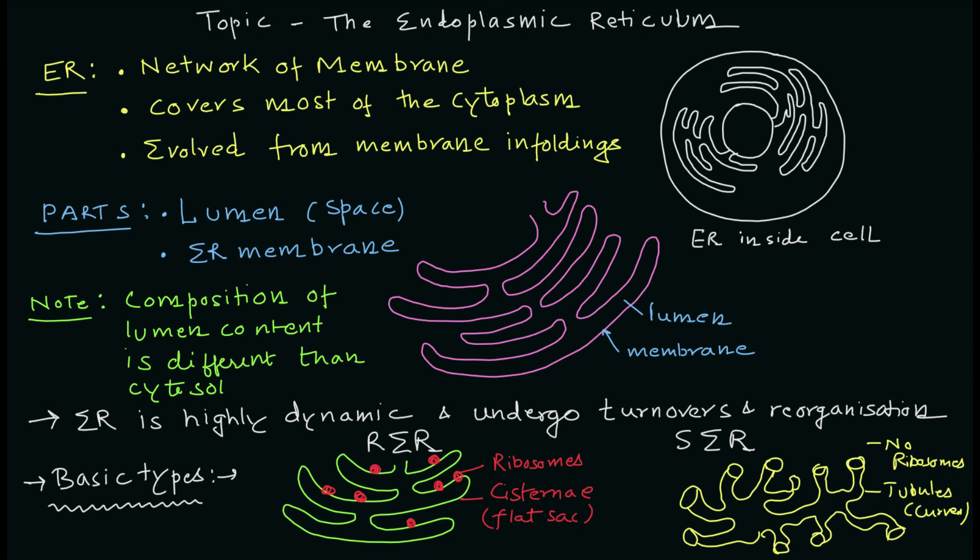The two basic types are rough endoplasmic reticulum and smooth endoplasmic reticulum. The RER is called 'rough' because it has ribosomes — RER does not mean ribosomal endoplasmic reticulum, it means rough endoplasmic reticulum. The SER is called 'smooth' because no ribosomes are present, giving it a smooth appearance.